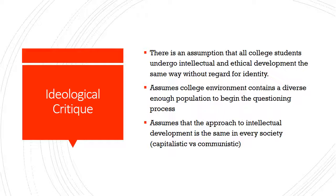One of the first components of deconstruction is ideological critique, which is trying to understand the general background that Perry based most of his ideological facets of the theory around. One of the major assumptions is that all college students undergo intellectual and ethical development the exact same way, with no difference or regard for identity. In his study, he mainly applied it to Harvard male students of the 1960s, which is around the time the theory came to be, so there is not much else to apply the theory to. It makes a generalized assumption that everyone intellectually and ethically develops the exact same way as these Harvard male students.